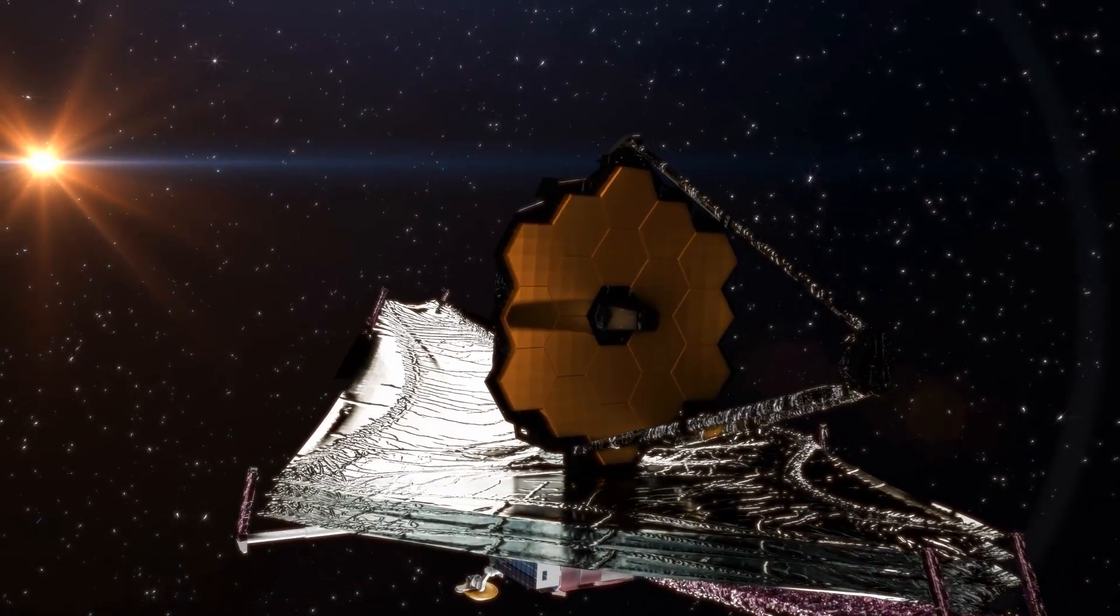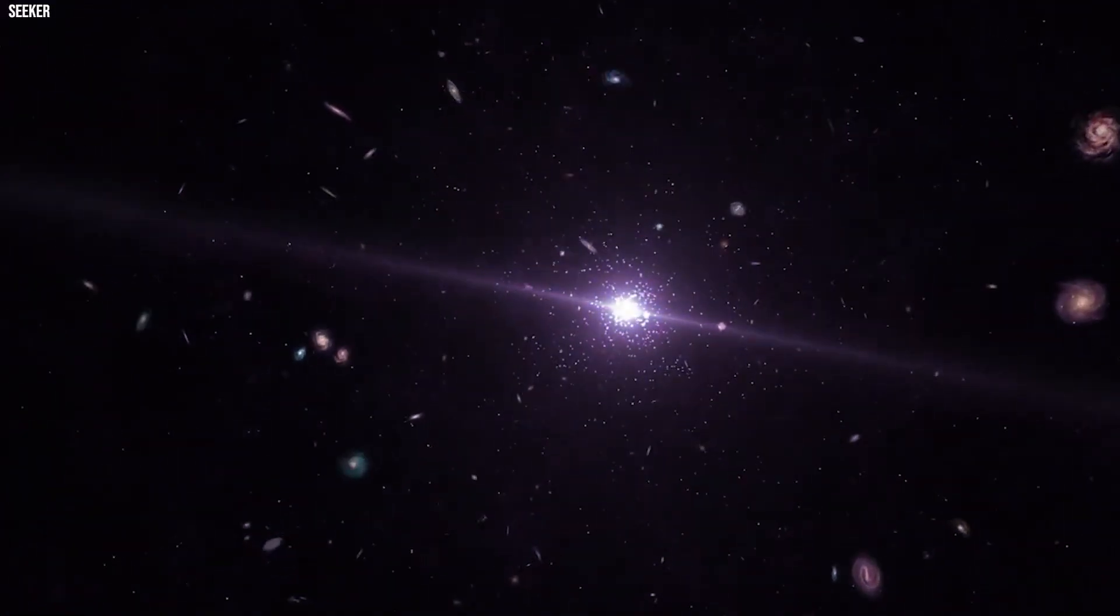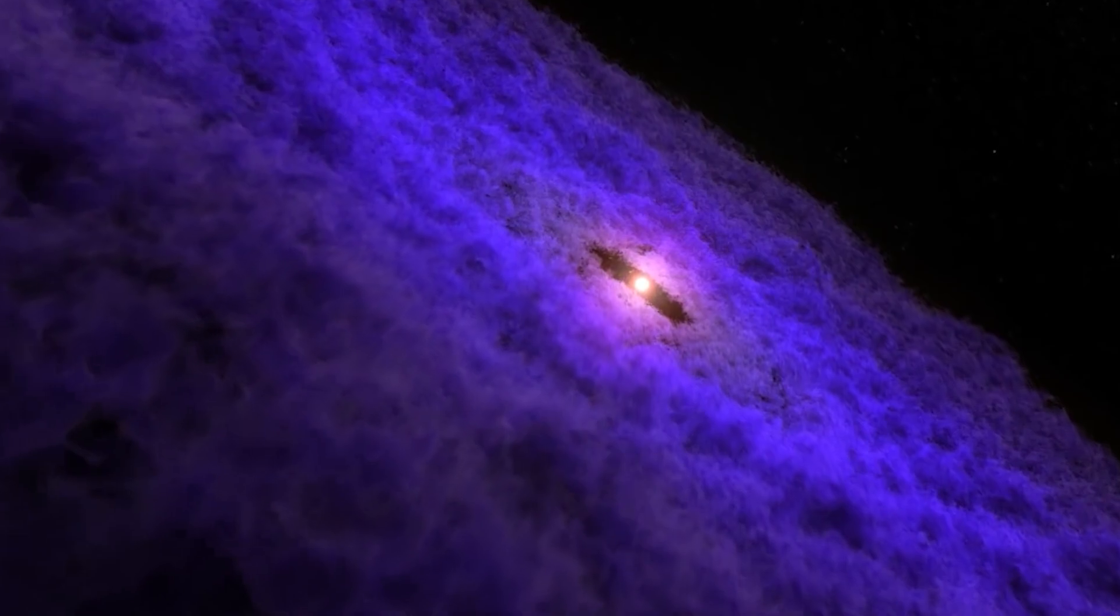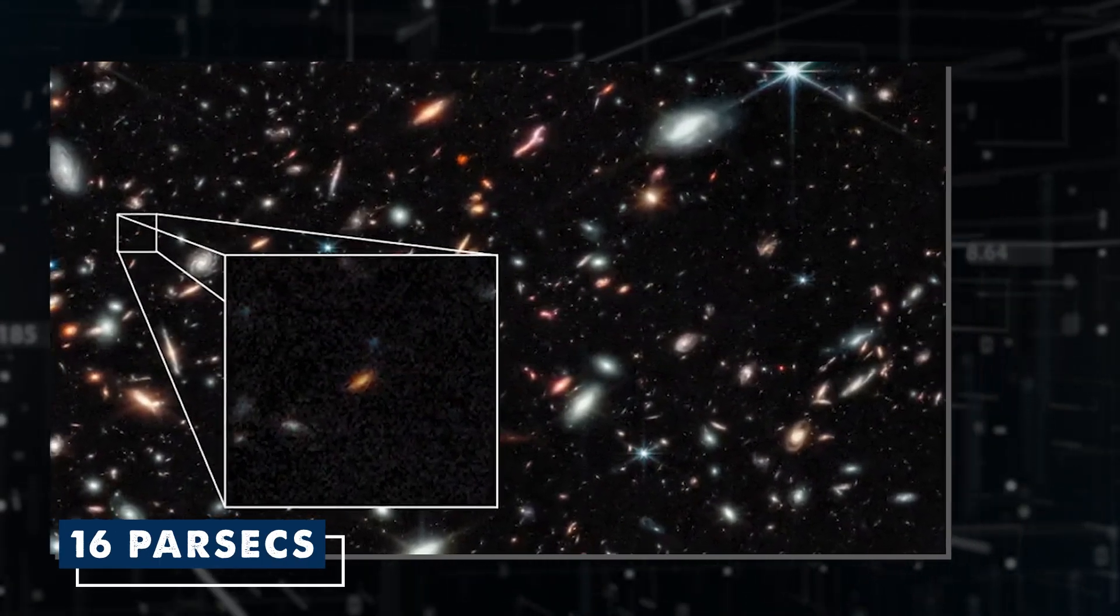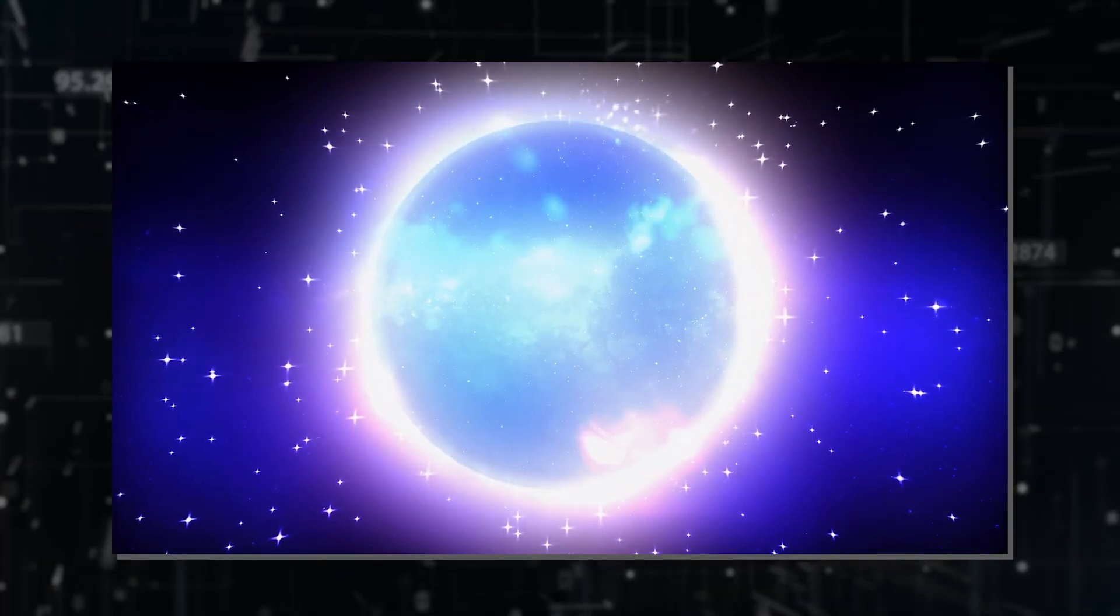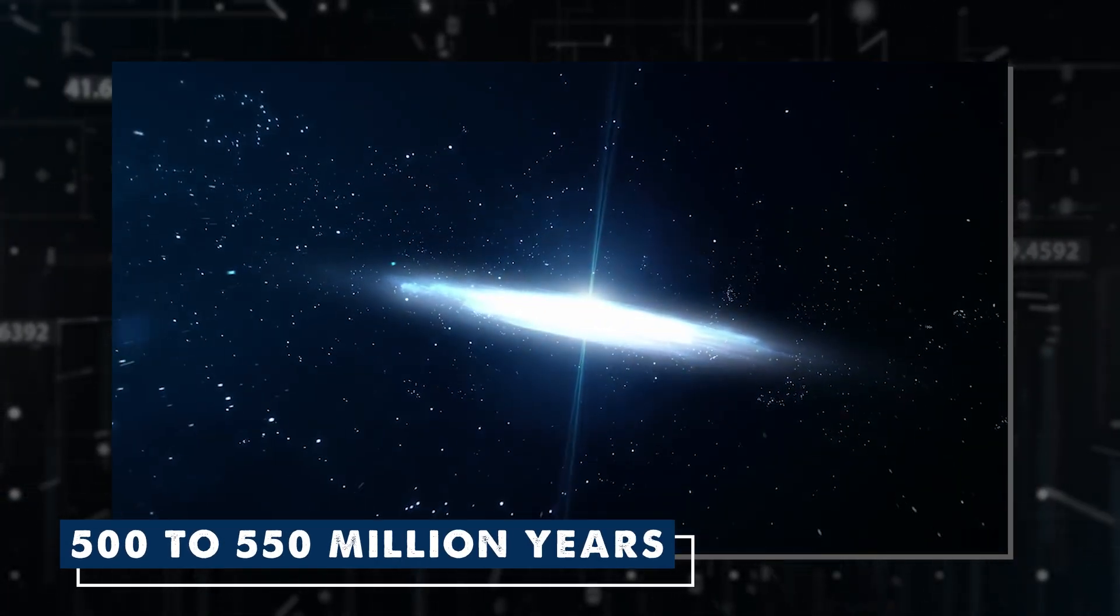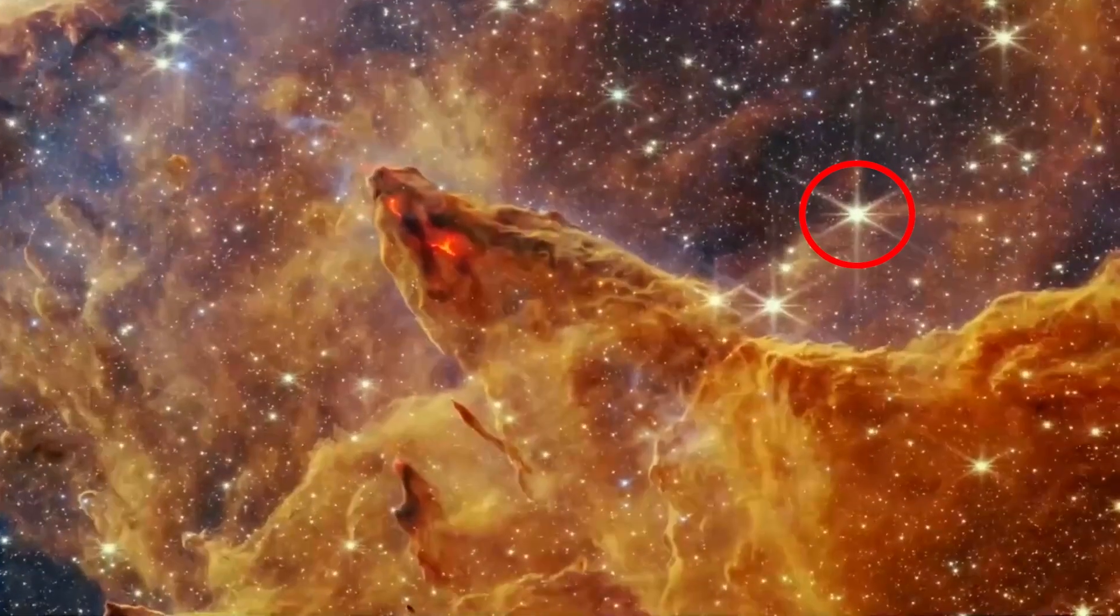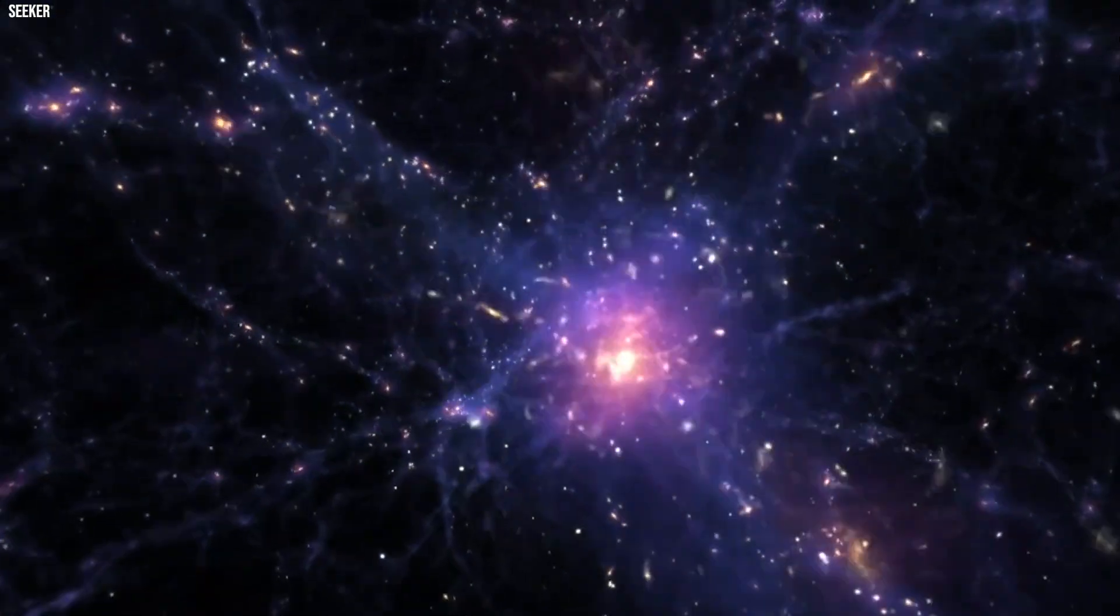The recent revelations brought forth by the James Webb Telescope challenge established scientific ideas, including aspects of the Big Bang theory. The telescope's discovery of a unique galaxy has left scientists baffled, as it deviates significantly from any galaxy observed before. This particular galaxy, relatively small with a radius of only 16 parsecs, is astonishingly forming stars at an unprecedented rate just 500 to 550 million years after the Big Bang. Whether this object qualifies as a galaxy or represents something entirely distinct remains unanswered.